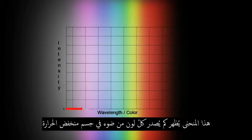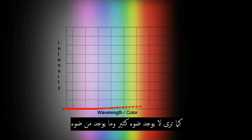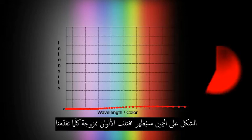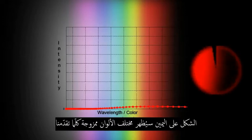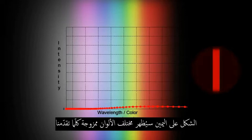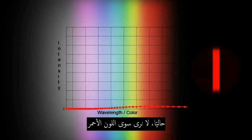This curve shows how much light of each color is emitted by a cool object. As you can see, there isn't much light, and what light there is mostly lies out past the red end of the spectrum, in the infrared. The figure on the right will show the different colors added together as we progress. Right now, only red light is visible.